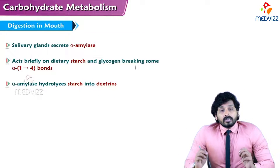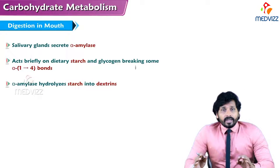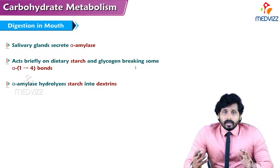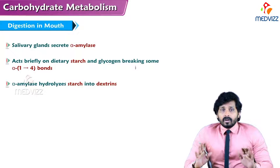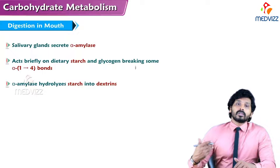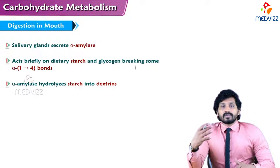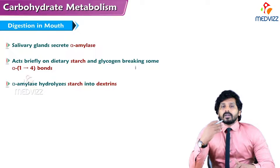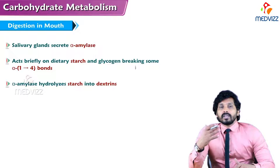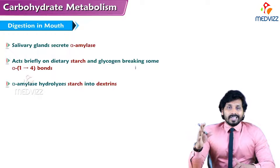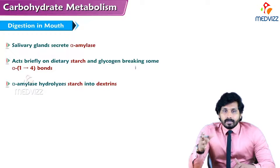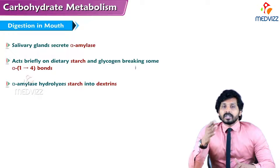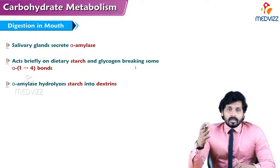Digestion of carbohydrates begins in the mouth and is then halted in the stomach for some time. In the mouth, digestion occurs because of saliva secreted by salivary glands. Saliva contains many substances, the major one being amylase. This amylase acts on starch, which is the major complex carbohydrate in our diet.